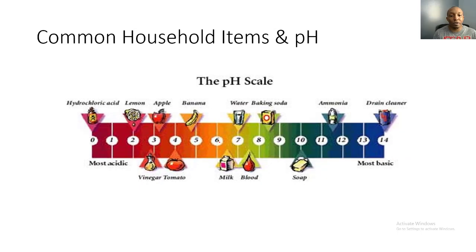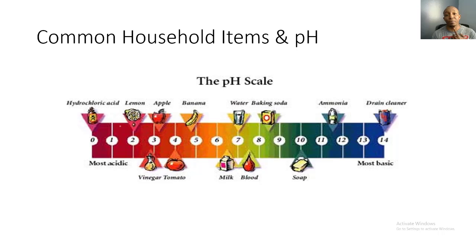Here's the pH scale with common household items. Water is neutral in the middle, which is why it's important we consume large amounts of it. Moving away from neutral, we have milk, bananas, tomatoes, and apples. Vinegar and lemon juice are more acidic, which is why you shouldn't drink large amounts of them. Hydrochloric acid would be fatal to consume. Gastric acid in our stomachs sits around pH 1 to 2, but is contained by the stomach's inner lining. For people with acid reflux, the acid can burn the throat and esophagus when it comes up.